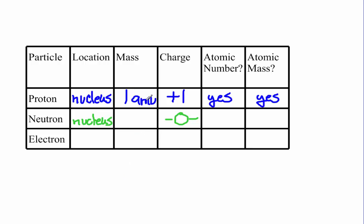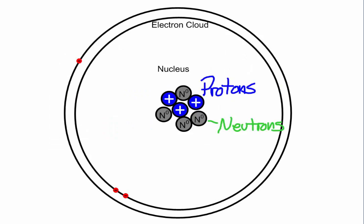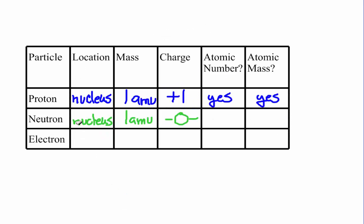But they do have a mass. They have the same mass as a proton, but no charge. They are just there to take up space. They don't add any charge. We have that the neutrons are found in the nucleus. They have a mass of one and a charge of zero. They are not a part of the atomic number. Atomic number is just the number of protons. But they do have mass. So they have an atomic mass and they are counted in there.